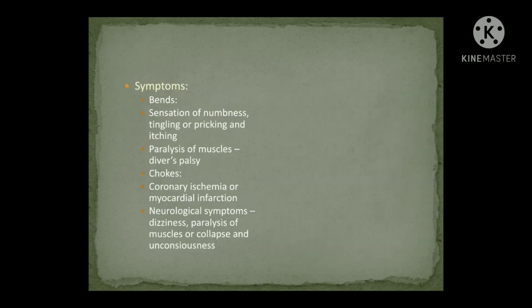The first symptom, bends, is caused by blockage of blood capillaries in the joints and muscles of the limbs, producing pain. The second symptom is sensations of numbness, tingling, pricking, and itching due to nitrogen in the fat depots compressing nerves and producing motor and sensory symptoms.